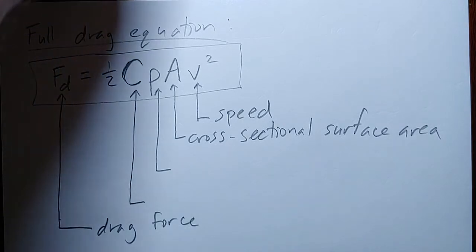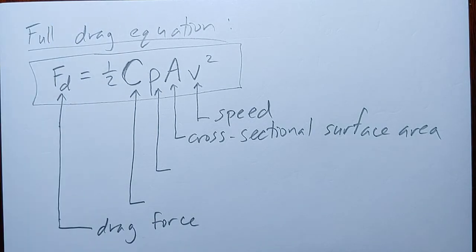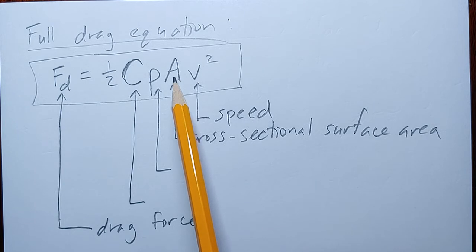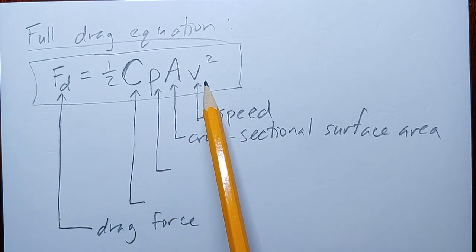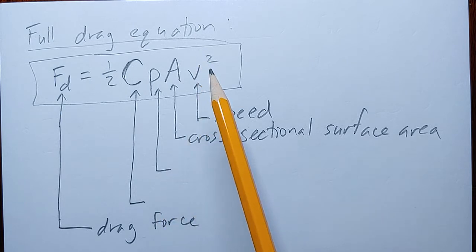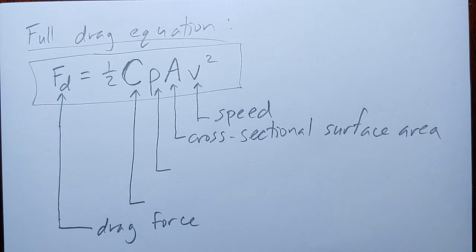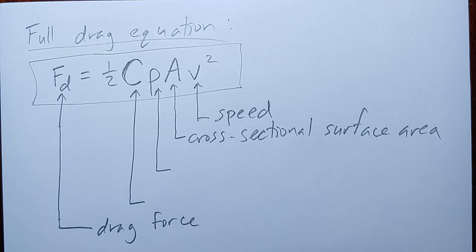This is why your gas mileage drops so quickly at high speeds. If you're going 30 miles per hour versus 60 miles per hour, 30 squared is four times smaller than 60 squared. And if you try to go 90 miles per hour, because of that squared relationship, the drag is significantly larger. So at high speeds there's a noticeable effect of air resistance on the car, and it makes it hard for the car to speed up after a certain point.